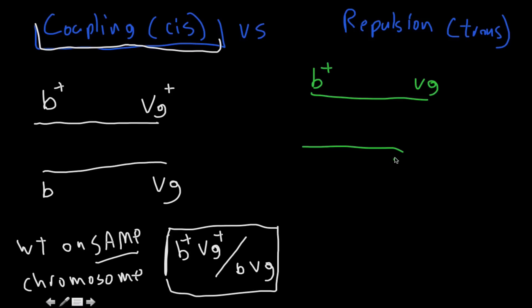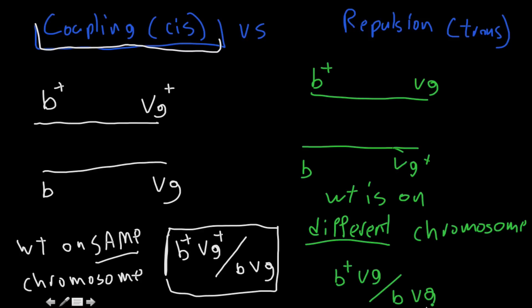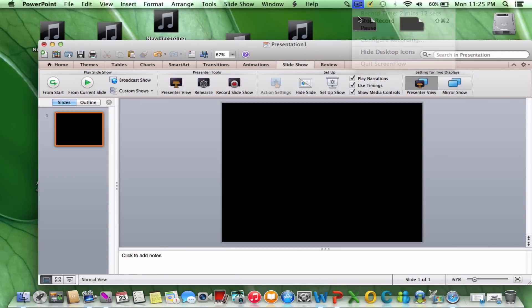We're going to have the wild type down here and then the mutant version there. So wild type is on trans, different chromosome. How would I represent this? Well, I would say B+ VG slash line B VG+. That's a good one.